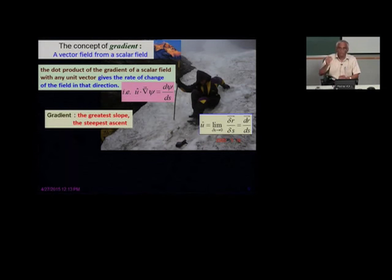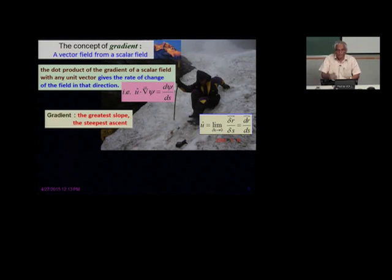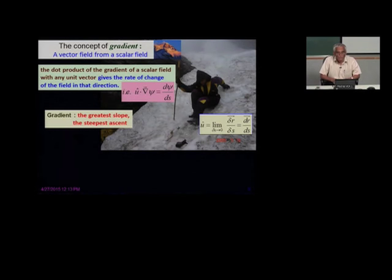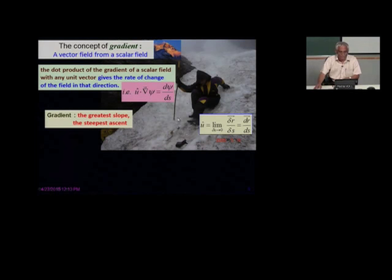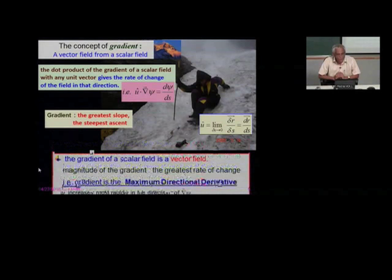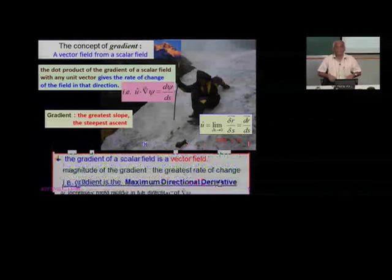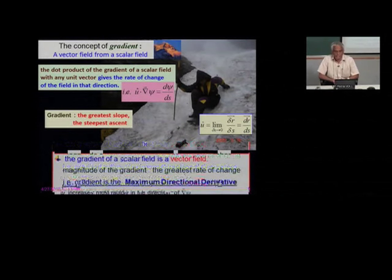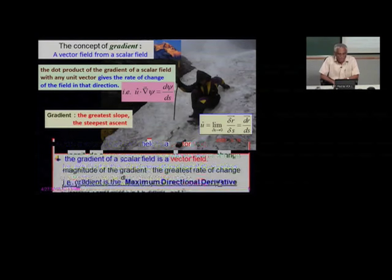If you want to descend from the mountain in the most efficient manner, you are talking about the negative gradient. That is what is meant by dr by ds and its limit. So if you want to know d-psi by ds — how much change per step you get — you take this dot product, where u is defined accordingly. It is important to realize that the gradient of a scalar field is a vector field. It is related to the directional derivative, and gradient is the maximum directional derivative.